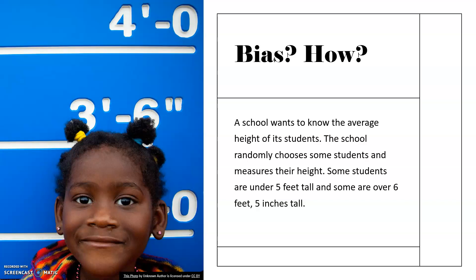A school wants to know the average height of a student, so the school randomly chooses some students and measures their height. Some students are under five feet tall and some are over six feet five inches tall. While those results are different, that is just a result of variation in the population — it is not a result of the way the survey was conducted. So this is not an example of bias.